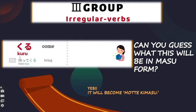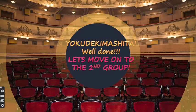'Motte kuru' means 'to bring.' Motte literally means 'to hold,' and kuru means 'to come' — so when you hold something and come, you are bringing it. So kuru will become kimasu, and in the polite form 'motte kuru' becomes 'motte kimasu.' Well done — you completed the group 3 verbs.